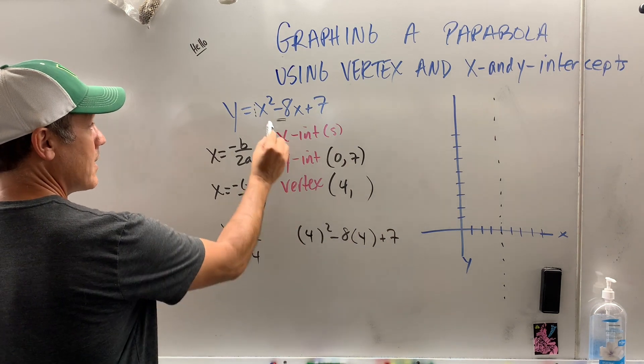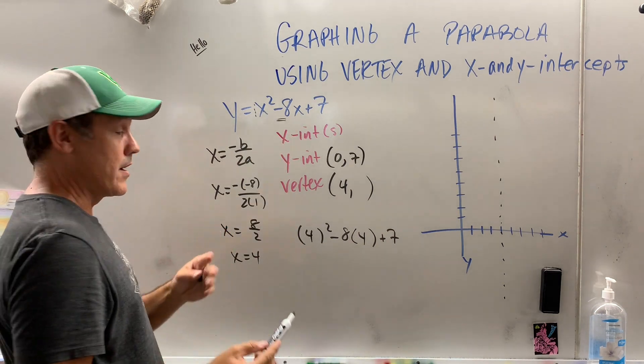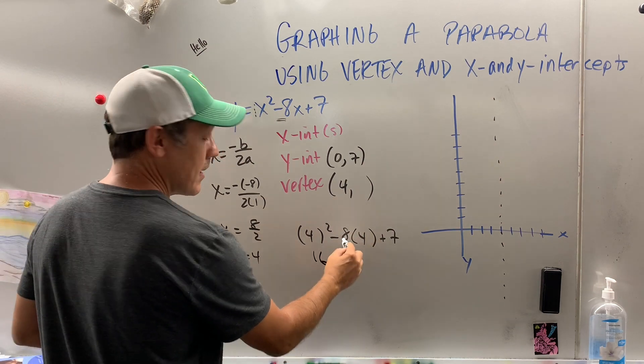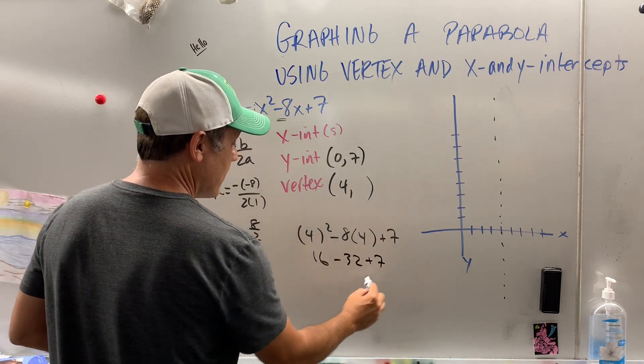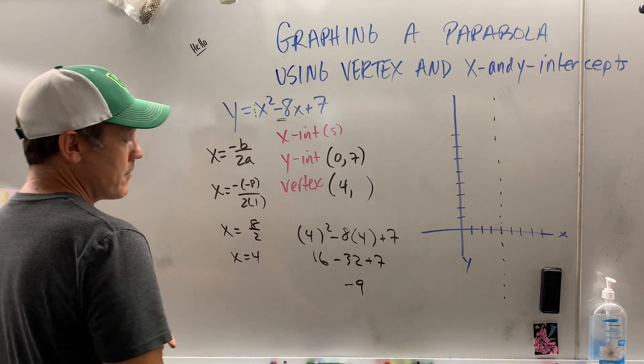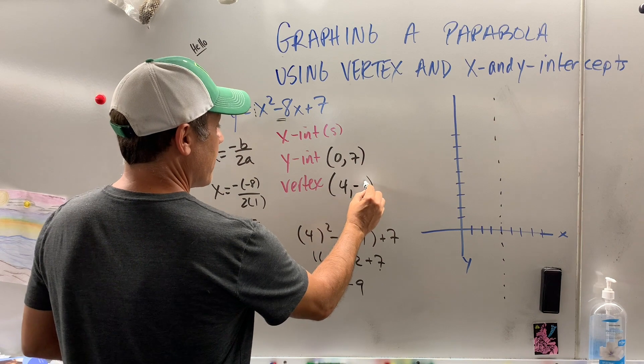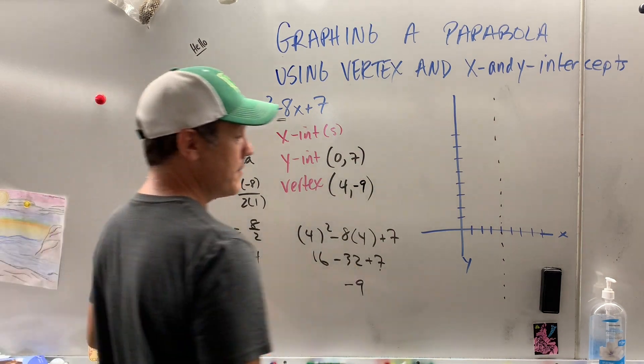All I did is I took 4 and I substitute it in for x. So 4 squared is 16, minus 32, 8 times 4, plus 7, negative 9 real quick. I did that fast. 23 minus 32, negative 9. So my vertex is 4, negative 9.